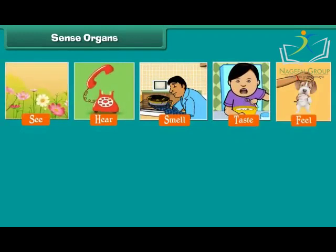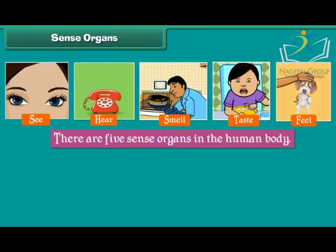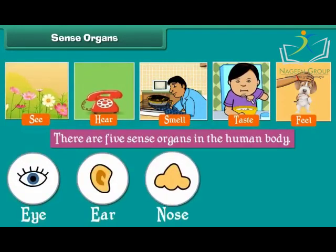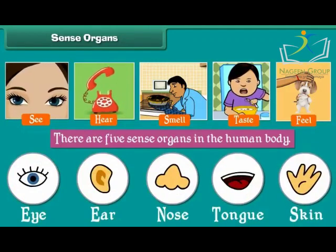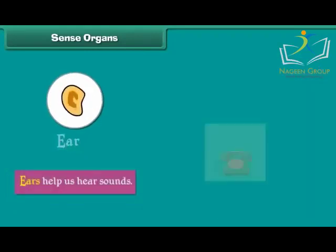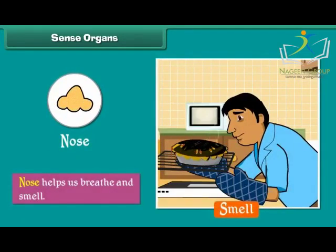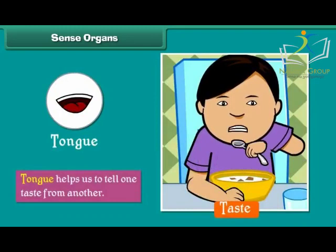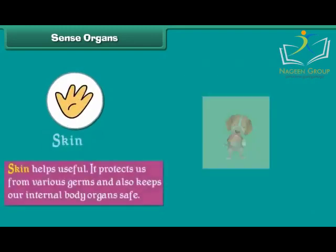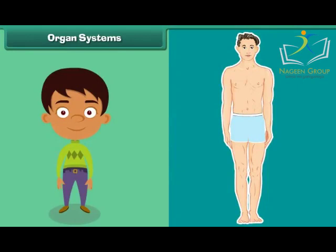The organs that help us to see, hear, smell, taste, and feel are called sense organs. There are five sense organs in the human body: eyes, ears, nose, tongue, and skin. Eyes help us to see the things around us. Ears help us to hear sounds. Nose helps us to breathe and smell. Tongue helps us to tell one taste from another. Skin protects us from various germs and keeps our internal body organs safe.